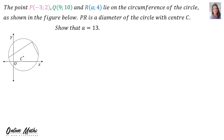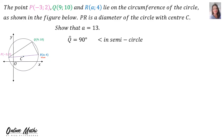Example 3. The point P(-3, 2), Q(9, 10), and R(A, 4) lie on the circumference of the circle as shown in the figure below. PR is the diameter of the circle with center C. Show that A = 13. Since PR is a diameter, we can say that angle Q = 90°, and the reason is the angle in a semicircle theorem. Therefore PQ is perpendicular to QR.